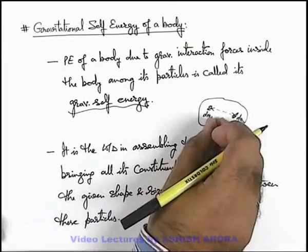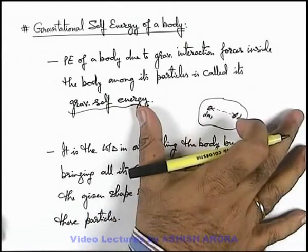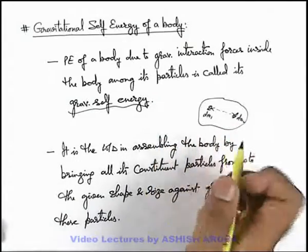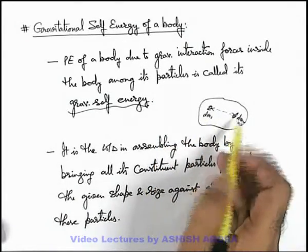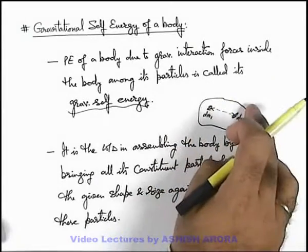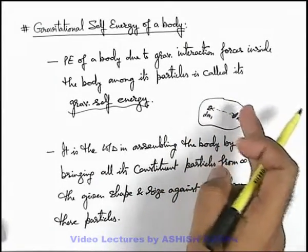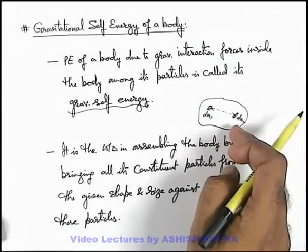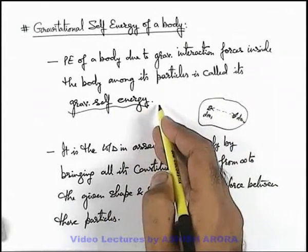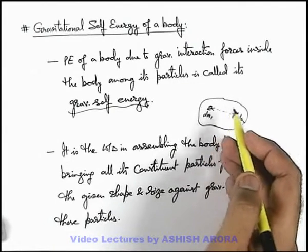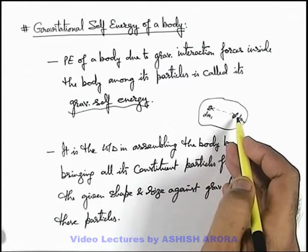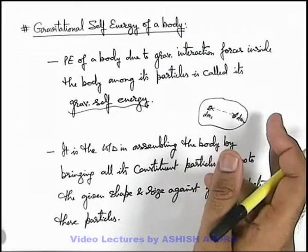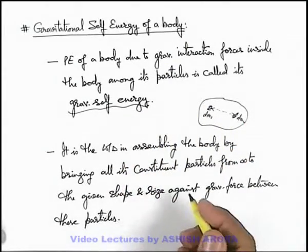So we can say when all particles of a body are separated at infinite separation and all elemental particles are brought close to each other, then against their gravitational interaction, when we assemble these particles in a given shape and size, whatever amount of work is done is stored in the form of gravitational interaction energy of the body particles — termed as gravitational self energy. Since gravitational forces are always attractive, the external work required in assembling these particles against gravitational forces will always be negative. So gravitational self energy is also a negative parameter.